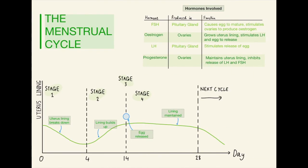Finally, we have the menstrual cycle. It looks like there's a lot going on here, but there are 4 hormones involved in the menstrual cycle and there are also 4 stages. The graph at the bottom is purely to do with the lining of the uterus and how it changes throughout a monthly cycle. Stage 1, for the first 4 days, the lining is broken down. Then the lining builds back up for the next 10 days. On day 14, roughly, stage 3, the egg is released. Then stage 4, the lining is maintained before going on to the next cycle. FSH, oestrogen, LH, and progesterone are the four key hormones. FSH stands for follicle-stimulating hormone, and LH stands for luteinizing hormone. It's important that you know the name of them, where they're produced, and their function. This is for both combined and triple science, so don't feel like you should skip over this.